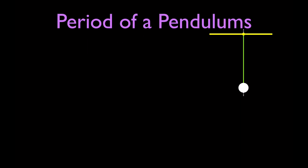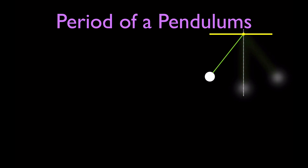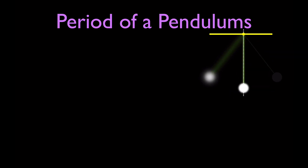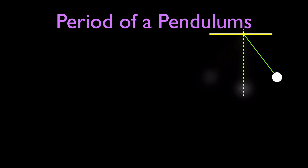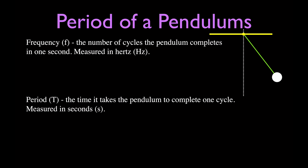Let's make sure we know what we're talking about with the period and the frequency. This is the pendulum — if we pull it back and release it, it's going to swing out and then swing back. When it swings out and then back again, that is one cycle. The period is the time it takes for the pendulum to complete one cycle, and the frequency is the number of cycles the pendulum completes in one second.